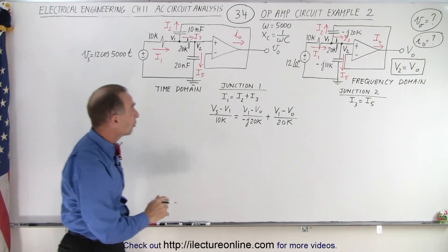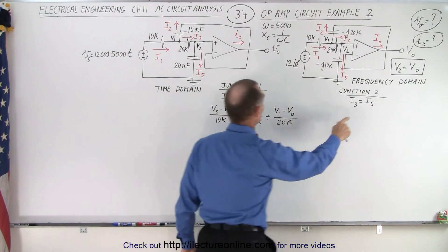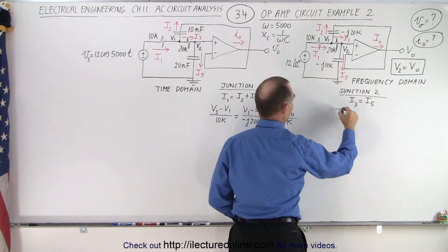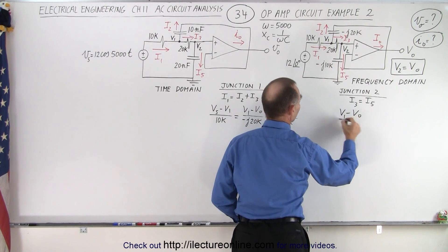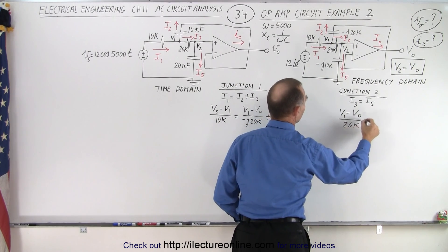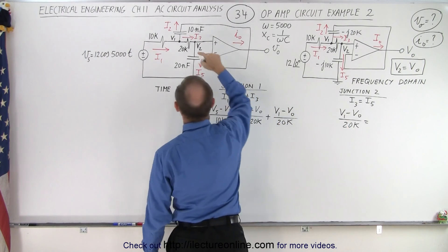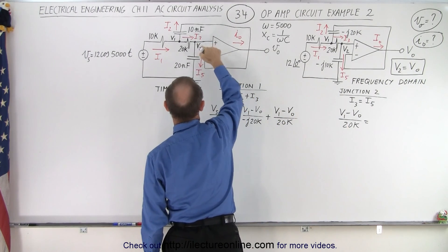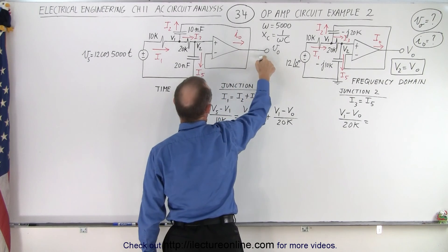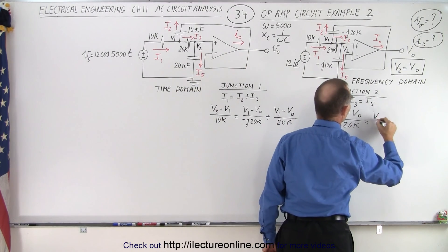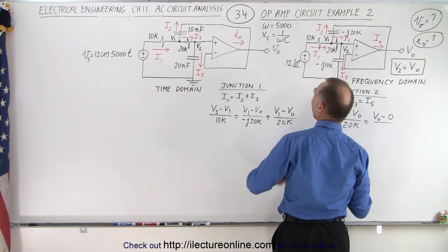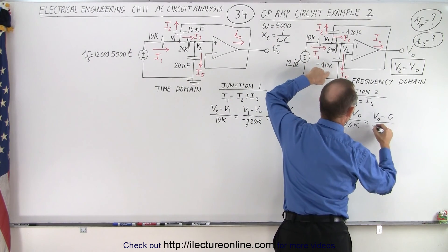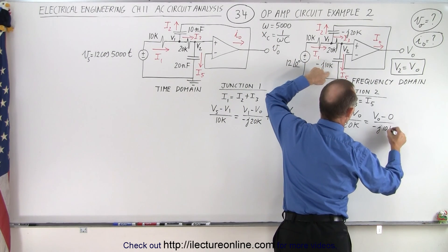Now we need to find our second equation using the second junction. For I3, that's the same as I3 over here. So that would be V1 minus V_out divided by 20k equals I5. I5 is the current coming down this way — it'd be V2 to ground. Now V2 is equal to the output voltage, so it'd be V_out minus ground.